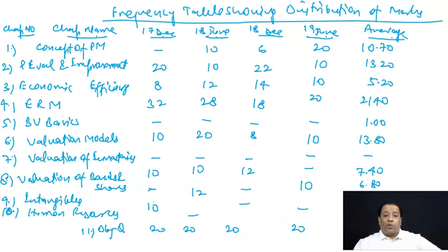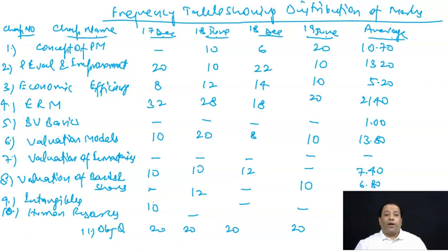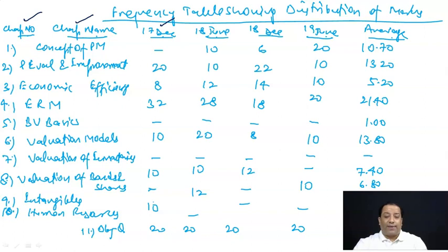Next, frequency tables showing distribution of marks — यह कुछ relevant attempts हैं। पिछले चार attempts के बारे में हमने बात की हुई है। हर chapter में से कितने marks का course आ रहा है, और average भी हमने निकाली हुई है। Chapter number, chapter name, 17 December examination, 18 June examination, 18 December examination, 19 June examination, and average.